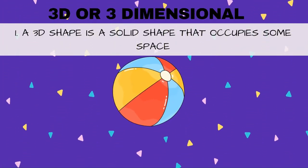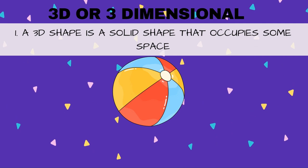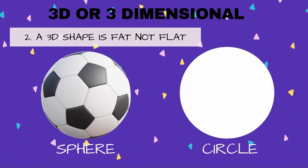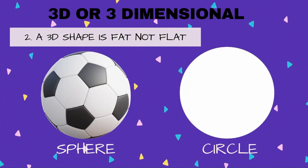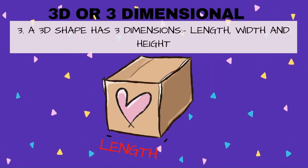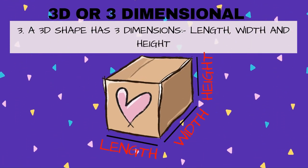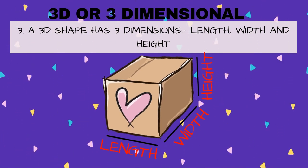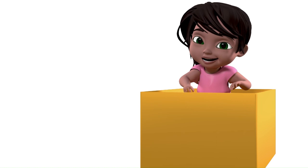A 3D shape is a solid shape that occupies some space. A 3D shape is fat, not flat. A 3D shape has three dimensions: length, width, and height. This box too is a 3D object.